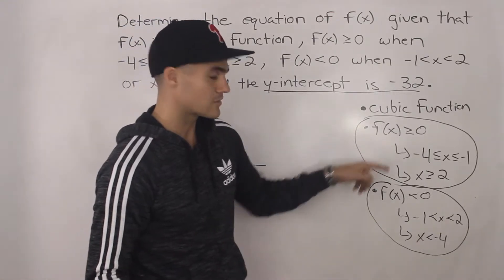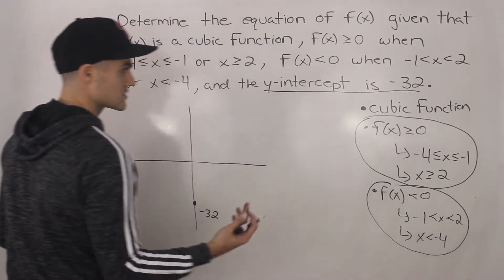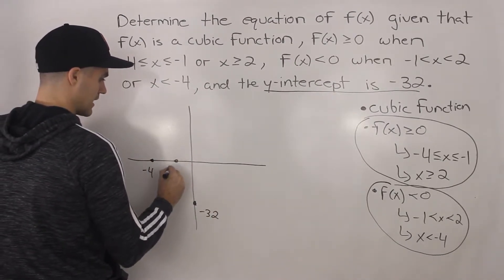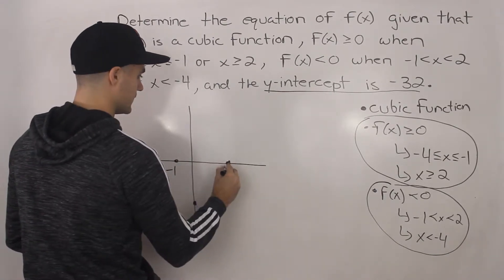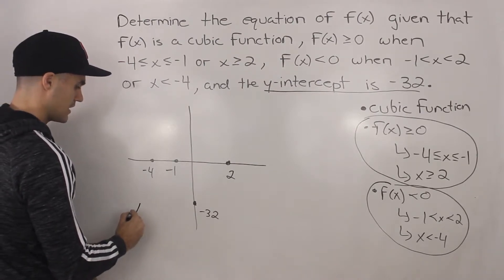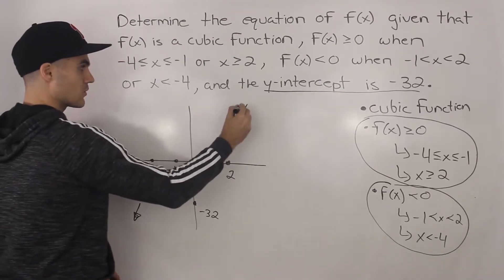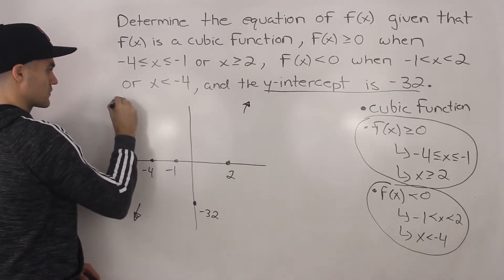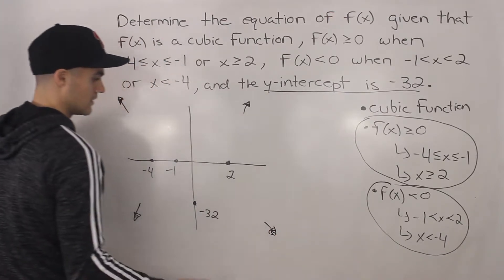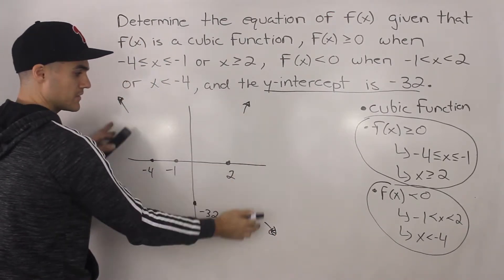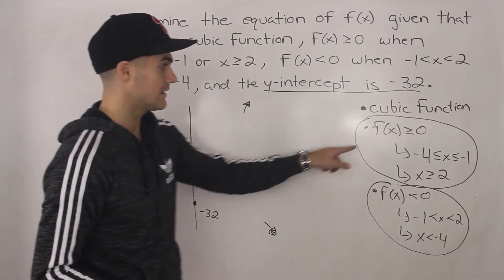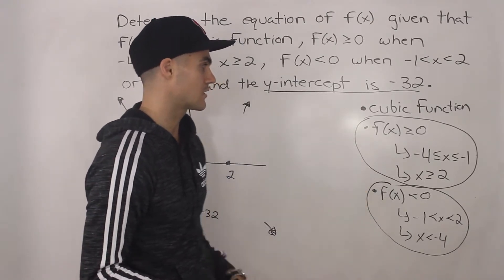Negative 4, negative 1, and 2 also appear when talking about when the function is less than 0. So what that means is those numbers are the x-intercepts of this function. So we've got negative 4, negative 1, and 2. This is a cubic function, so it's either going to have end behaviors from quadrant 3 to quadrant 1, or from quadrant 2 to quadrant 4. We don't know that yet, but it has to satisfy all the given conditions.